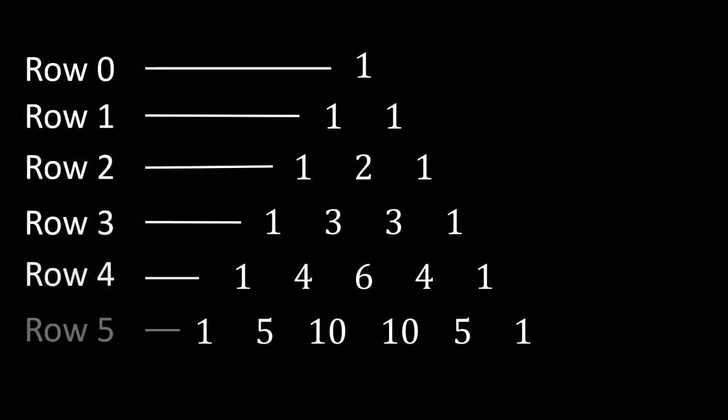For clean notation, we will be counting the rows starting from row 0, and within each row, the terms will also be counted starting from 0.